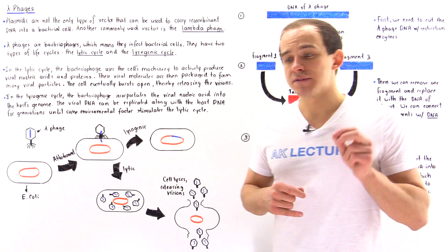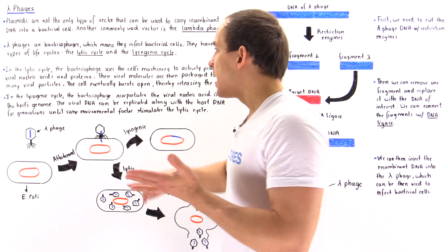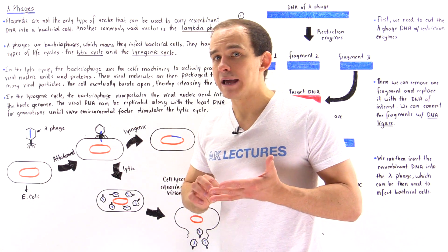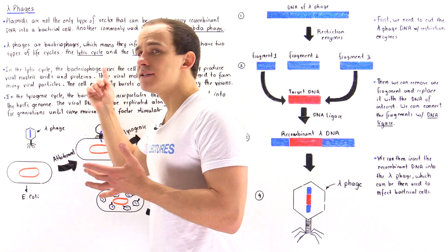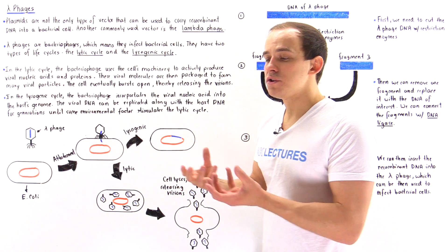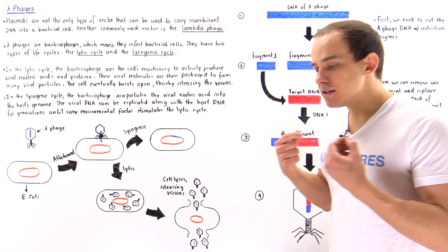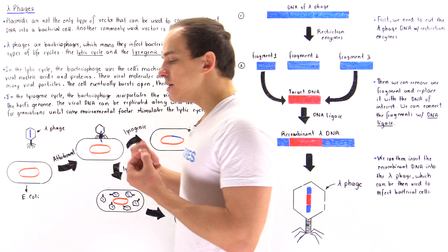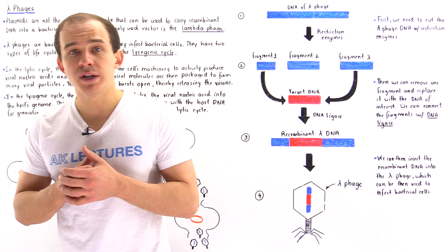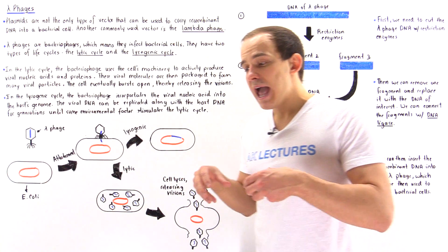The lambda phage has two types of cycles: the lytic life cycle and the lysogenic life cycle. In the lytic cycle, this is the dangerous cycle that ultimately kills the cell. The bacteriophage essentially hijacks the machinery of that cell — the ribosomes and so forth.